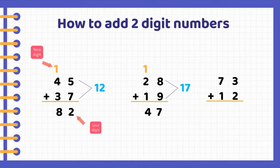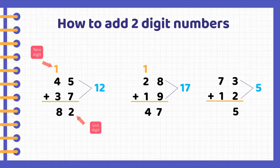For our next example, we would add 3 plus 2. In this case, 3 plus 2 is not a double-digit number, so we would just need to keep the unit digit in the units place. So now we just have to add 7 plus 1, which is 8. Our final answer is 85.